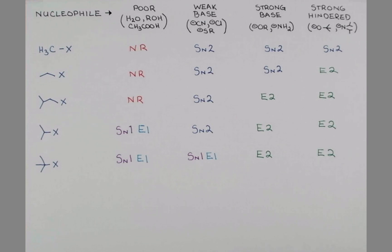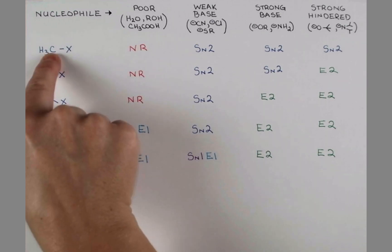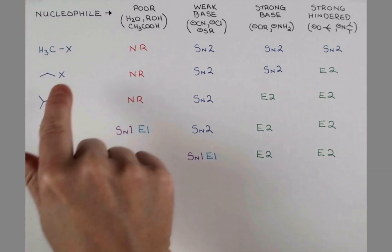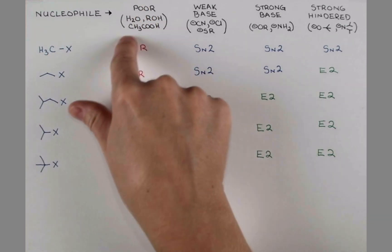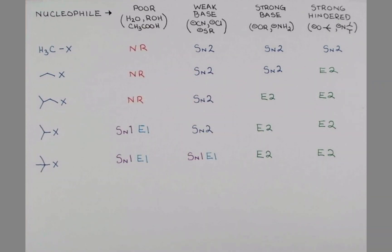Okay, let's do a summary of the trends we're starting to discover from this chart. All of our primary and our methyl case, they do not react well with weak nucleophiles. So we have this corner of our chart, which doesn't react.